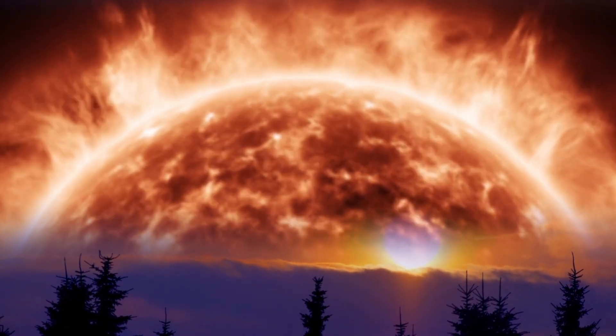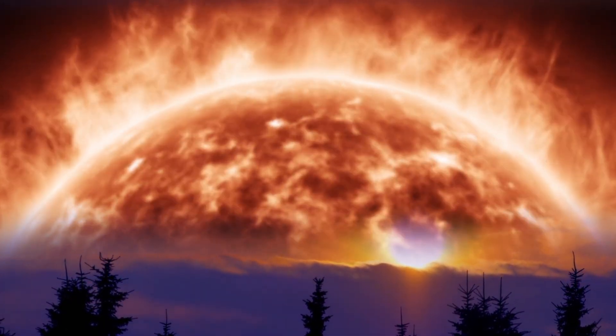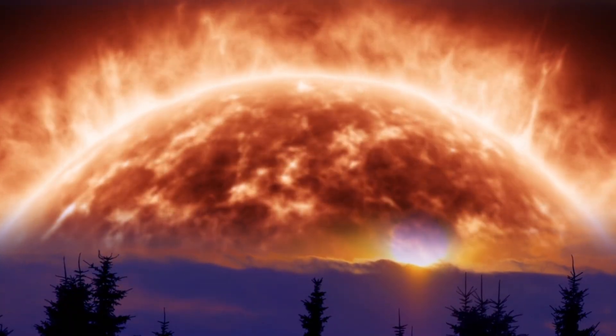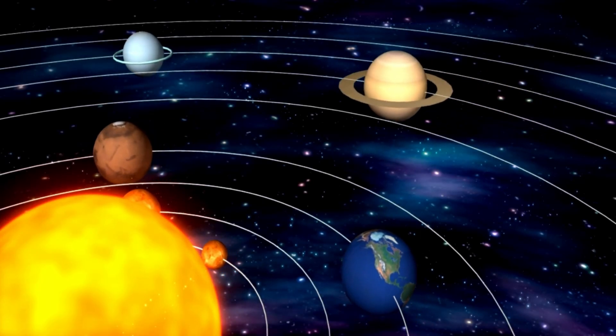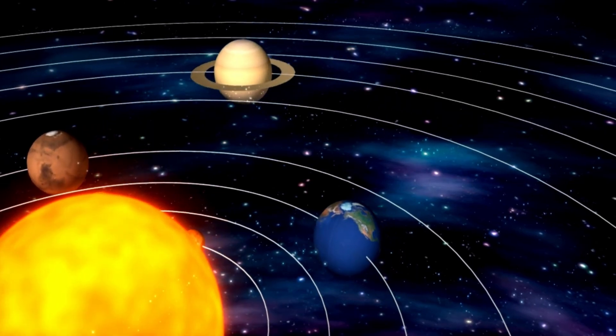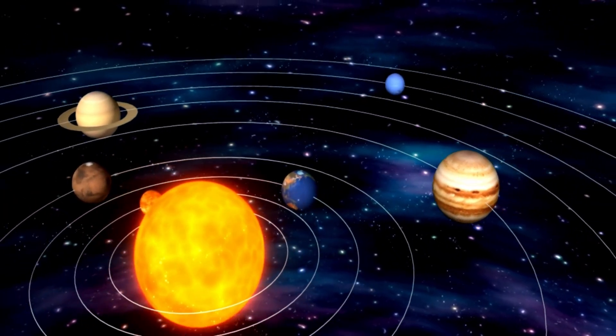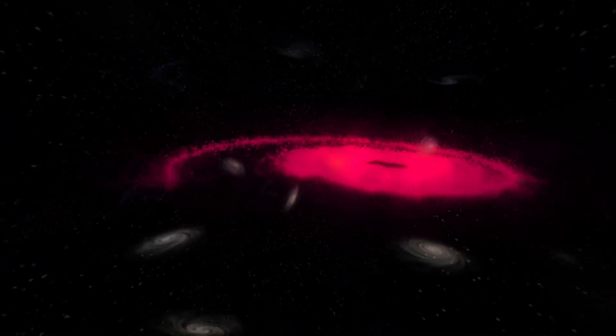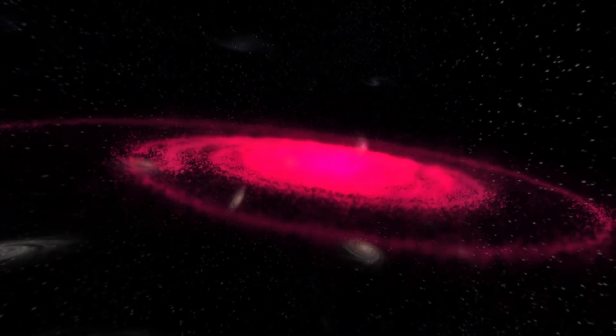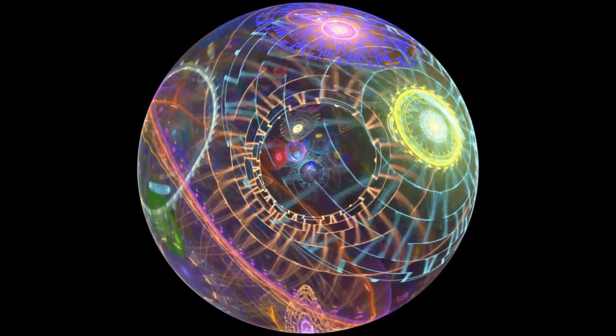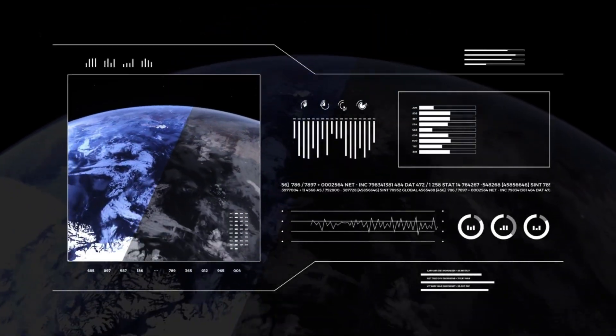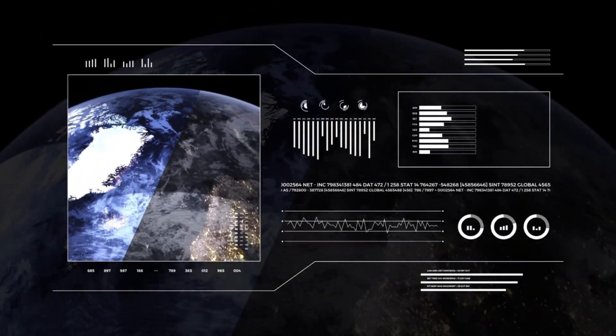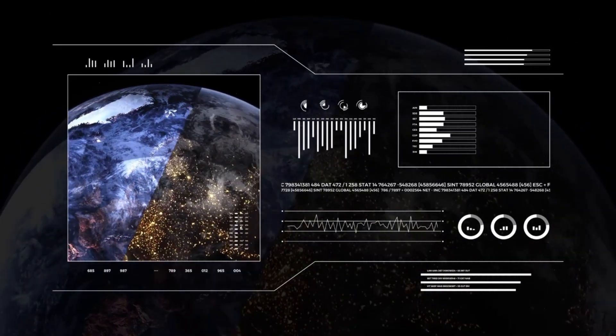Voyager 1's crossing into interstellar space was confirmed through data from its plasma wave instrument between April and May 2013. This instrument picked up a massive solar eruption that caused nearby electrons to oscillate. These vibrations allowed scientists to measure the density of the surrounding space, which turned out to be much higher than within the heliosphere. This confirmed that Voyager 1 had exited the heliosphere on August 25, 2012. Voyager 2's plasma data later supported these findings, cementing the moment as one of the most important milestones in space exploration.